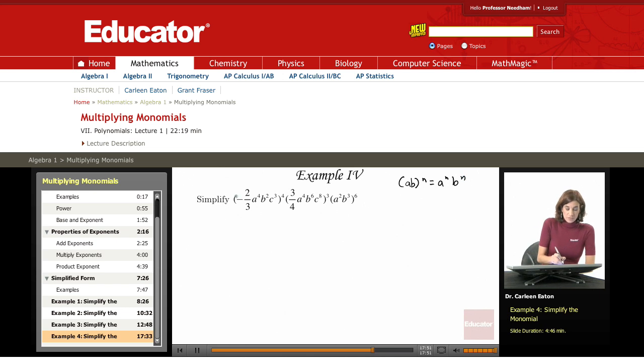So starting with this first expression right here, I have negative two-thirds, and that's raised to the fourth power, a to the fourth raised to the fourth, b squared to the fourth, c cubed to the fourth.